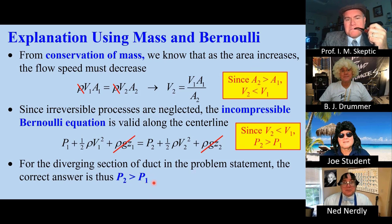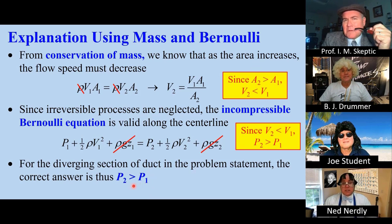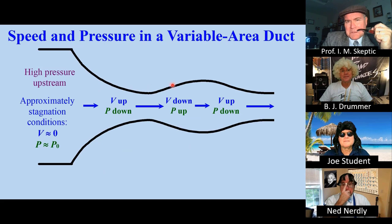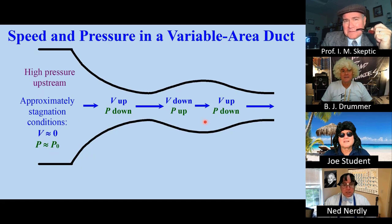But how can the flow go downstream if the pressure upstream is lower? Well, you need to remember that this section of duct is just one section in an overall duct system. I'll show you. Suppose the whole duct looks like this. If the flow is driven by a high-pressure tank, we have approximately stagnation conditions here.